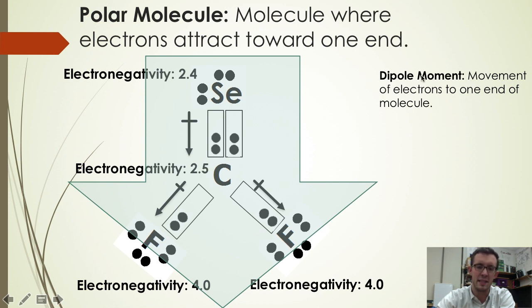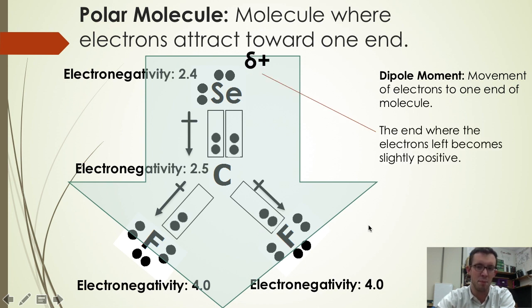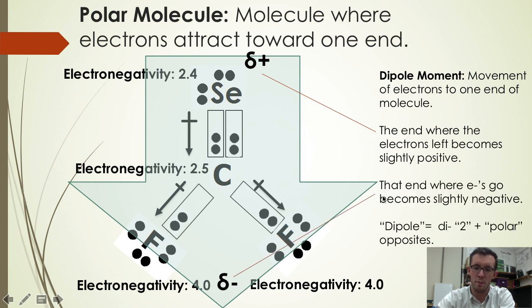We call this a dipole moment. In a dipole moment, the end where the electrons leave becomes slightly positive, and the end where the electrons are moving toward becomes slightly negative. And in fact, these opposite charges are where the term dipole comes from — di meaning two, and polar meaning opposite charges.